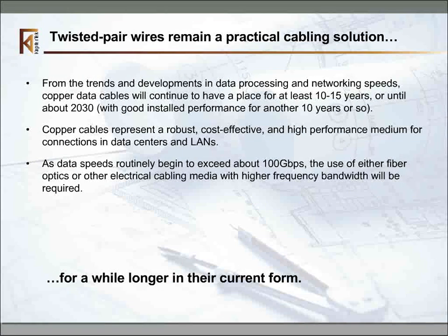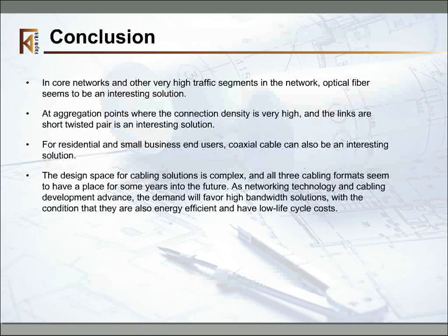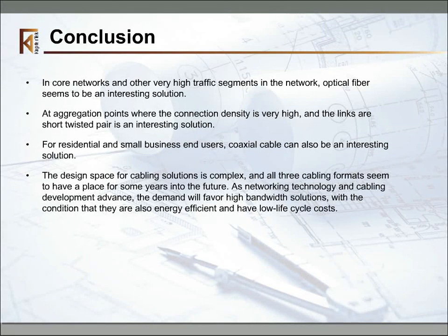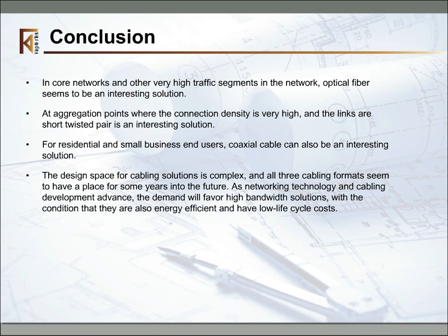Twisted pairs are going to remain a practical solution, at least for a while longer in their current form. In conclusion: networks are getting faster, cables are getting faster. There are two or three core choices in network cabling — they all have advantages and some disadvantages. The cable designer needs to look very carefully at the requirements, the lifecycle costs, the energy impacts, and of course what the user experience will look like. It's a complex space.